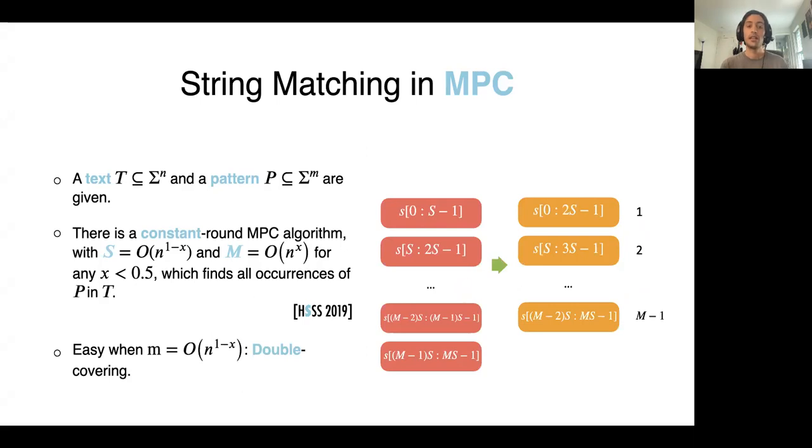If the pattern size m is small, for example bounded by n^(1-ε), we can use double covering technique. First, we partition the string into blocks of size s and put each two consecutive blocks into memory of a single machine. This way, for any match, we have the necessary information to check if this is a match or not.